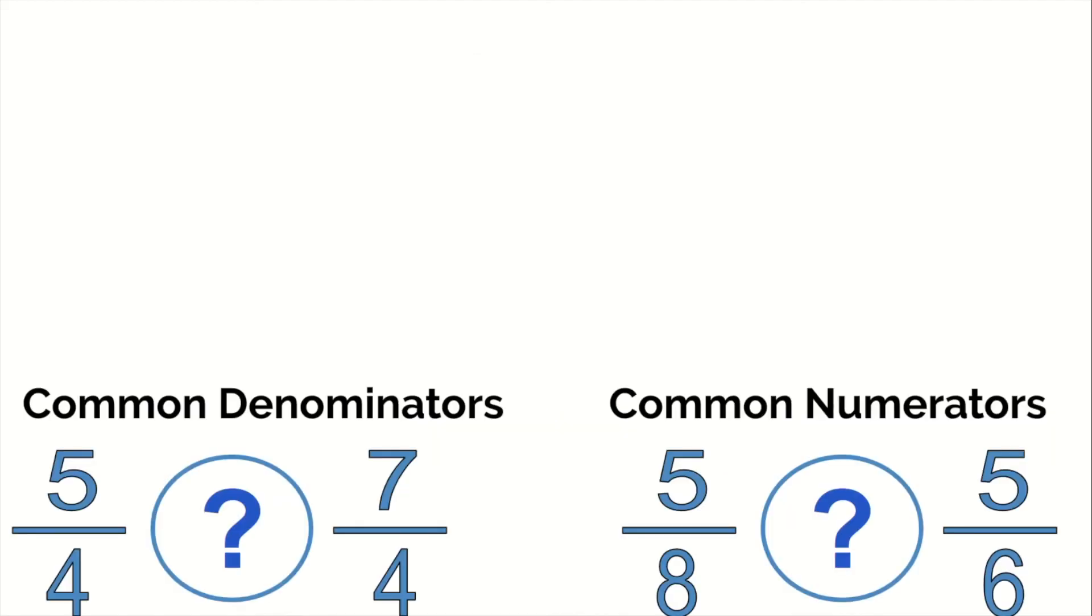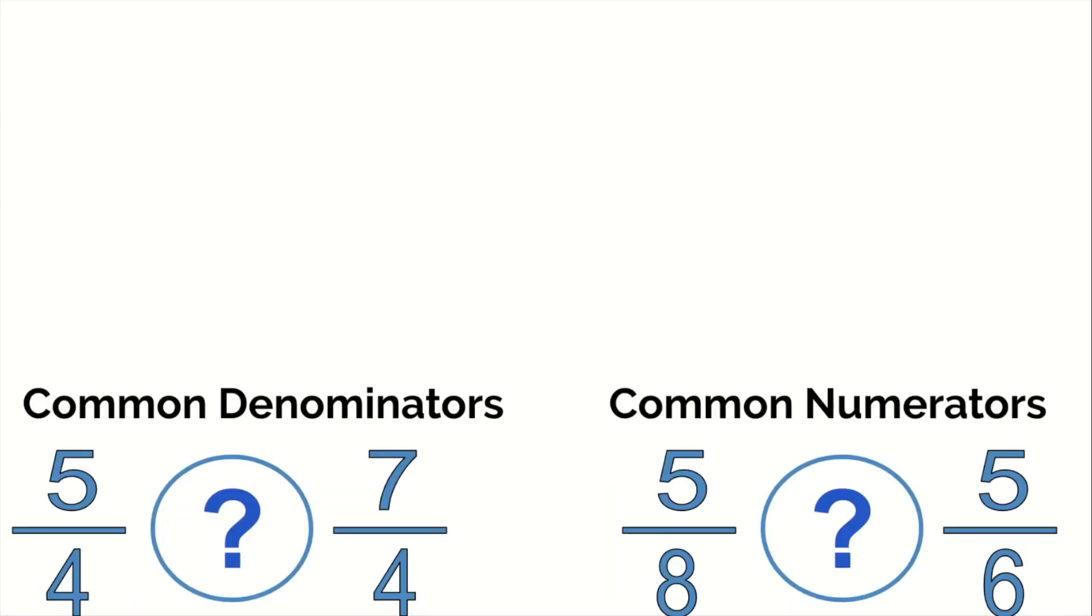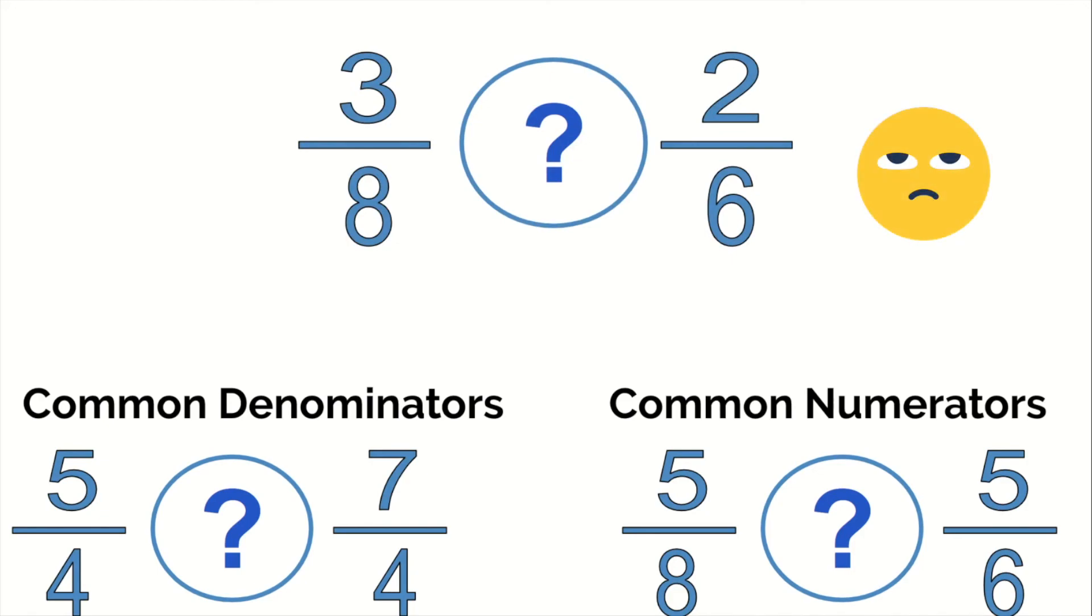Just a reminder, we've been comparing common denominators when the denominators are the same, and then common numerators when the numerator is the same. Our strategy works in these situations. However, when the numerator and the denominator are both different, you're going to need a different strategy, which we will cover in a different video.